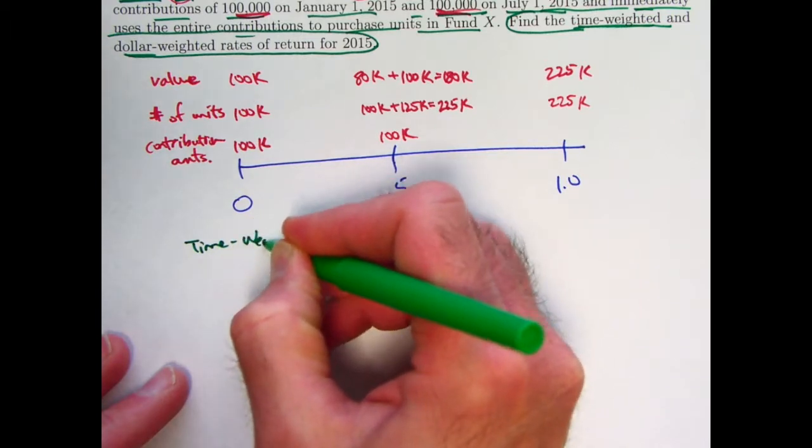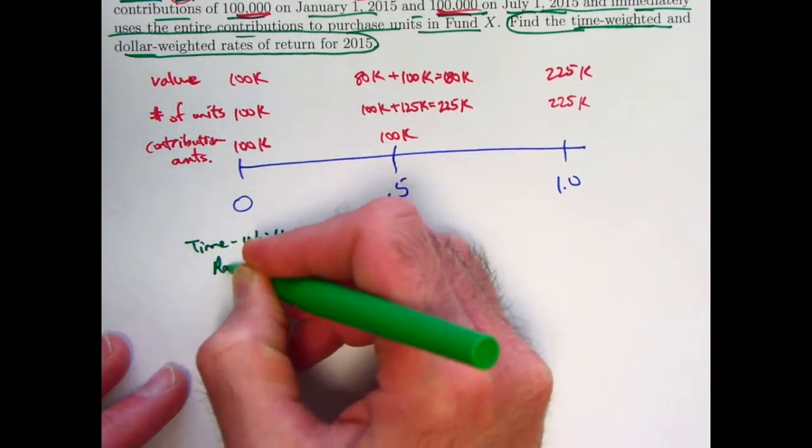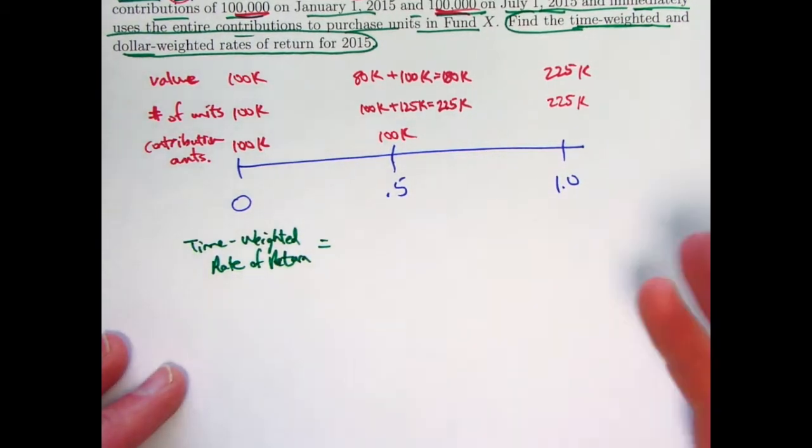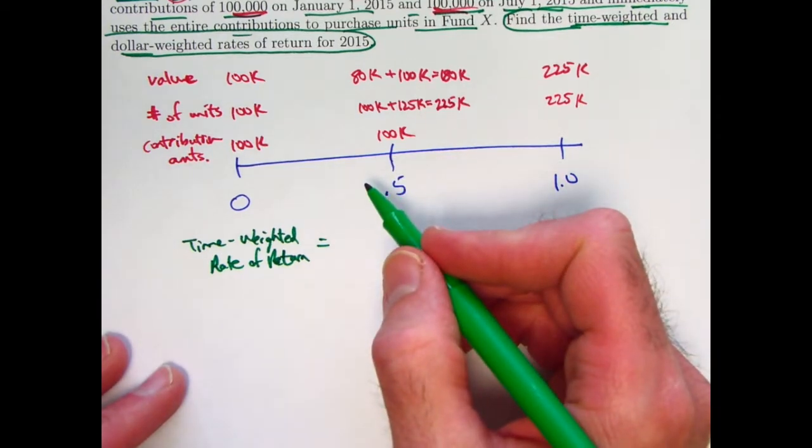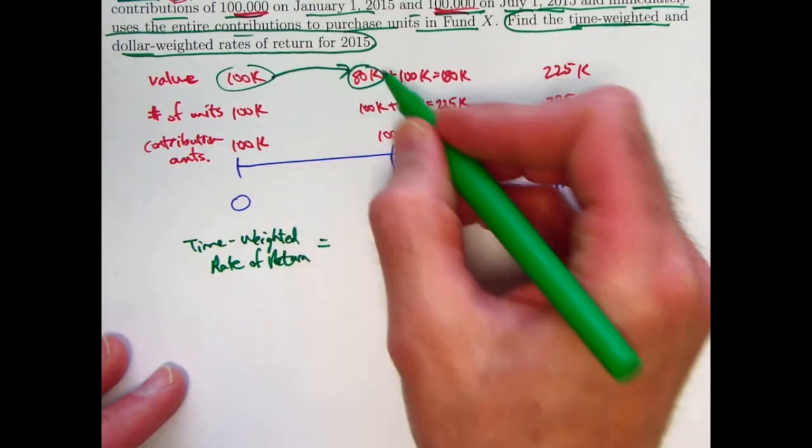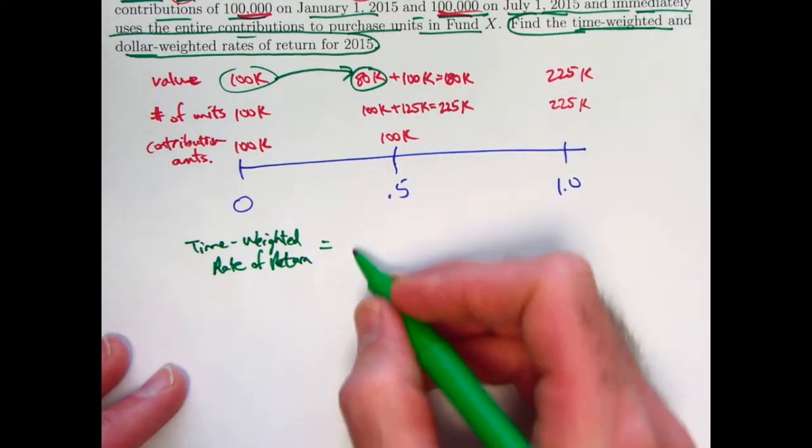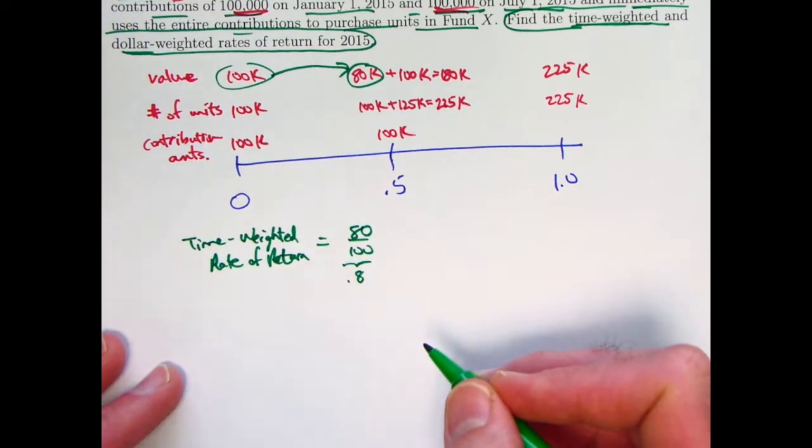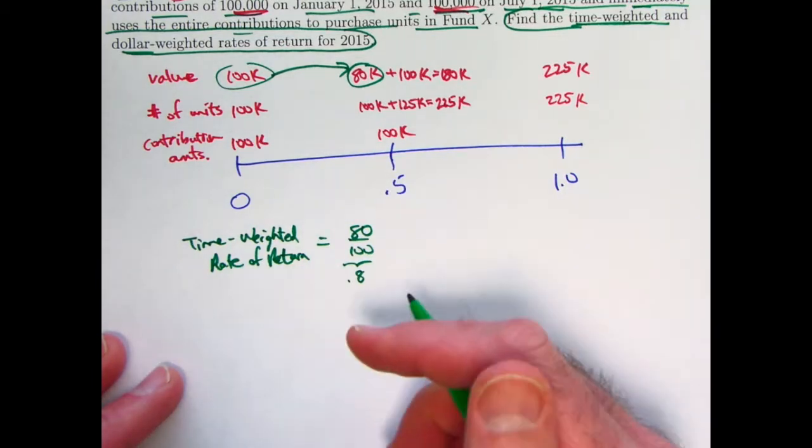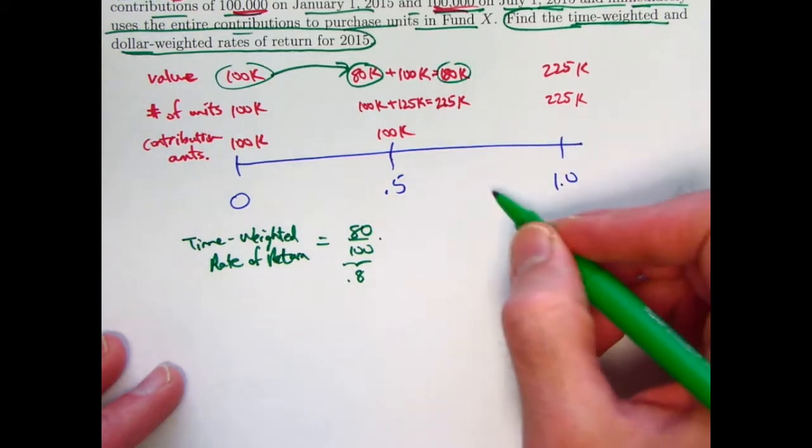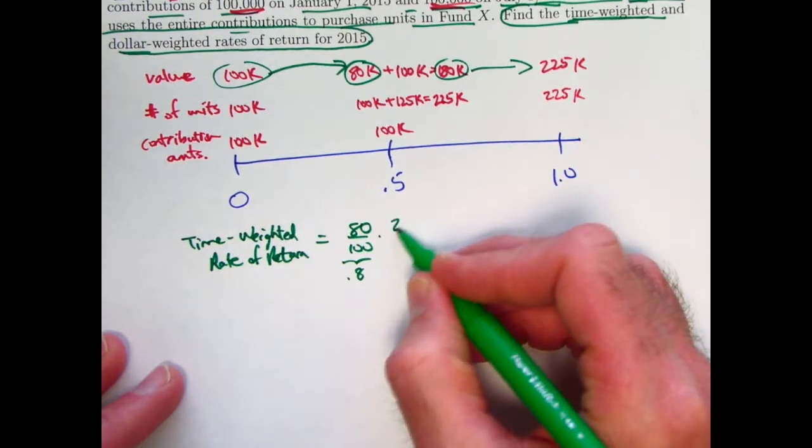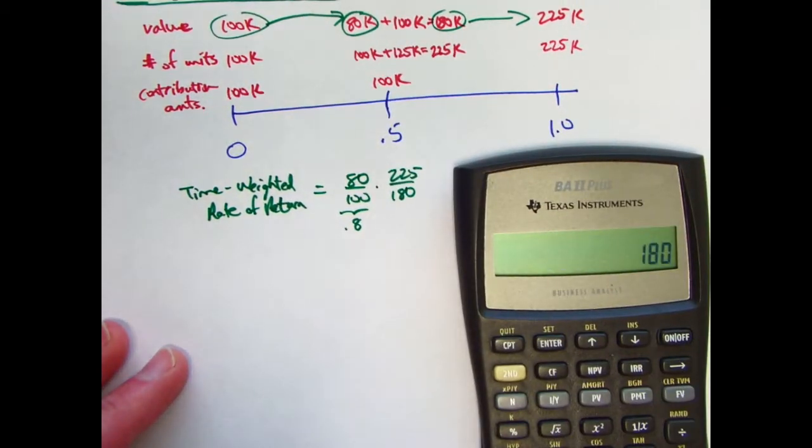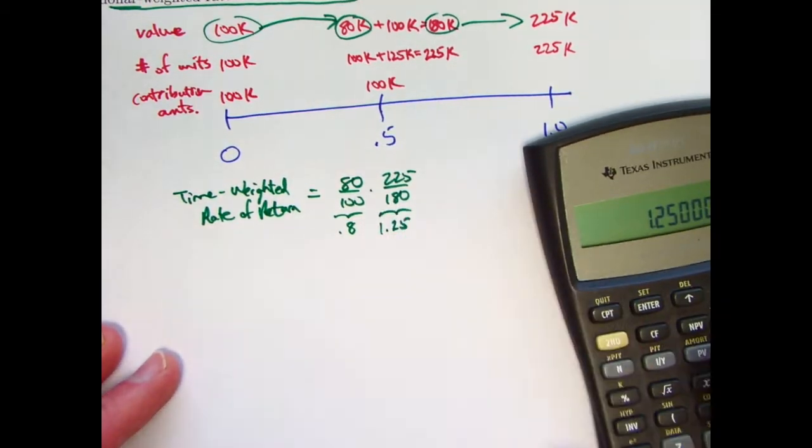All right, now let's be a bit more formal about these different rates of return. The time-weighted rate of return based on what we talked about in the last three or four videos focuses on looking at the growth factors and multiplying them and then subtracting 1 to get the actual rate of return. Focus on the values here. The 100,000 goes down in value to 80,000. So right before that next contribution in value of 100,000, we've gone down to 80,000. 80 divided by 100, or 0.8, would be the growth factor for the first half year. Then we have 180,000 right after that deposit. That grows to 225,000, so we get 225 over 180.